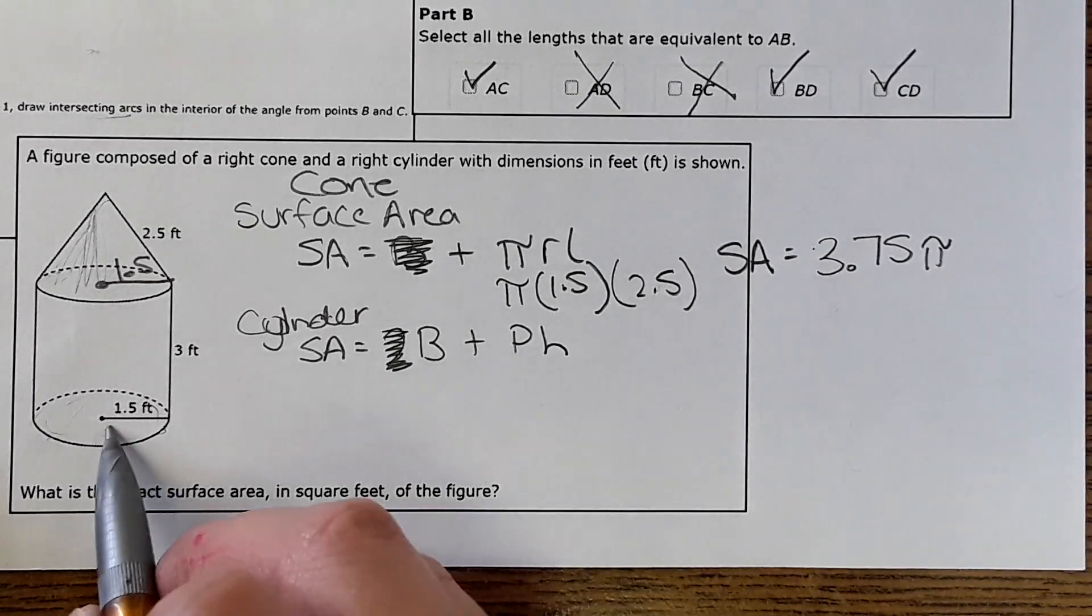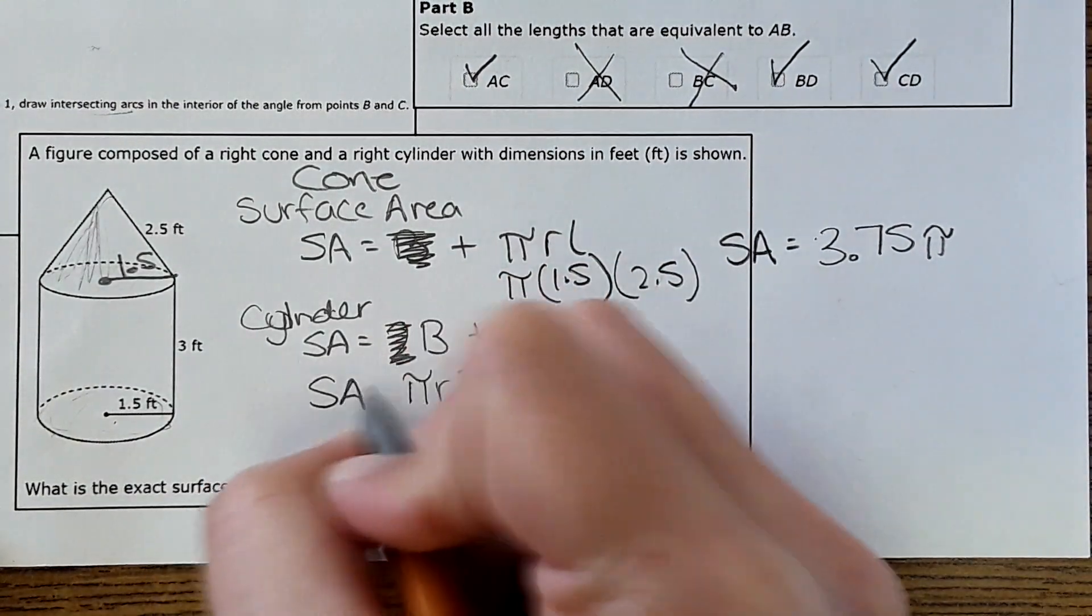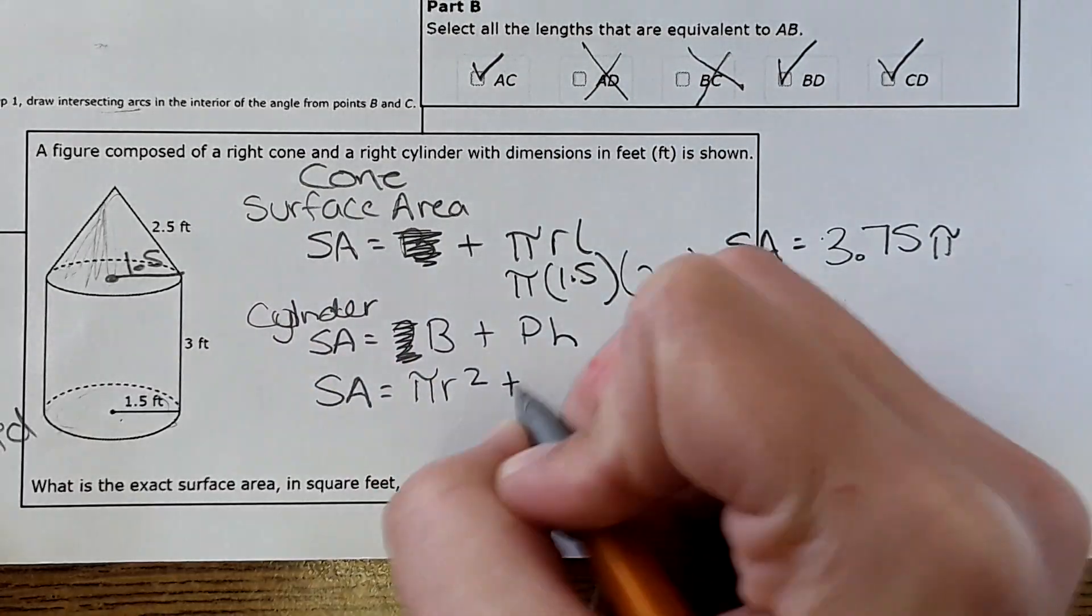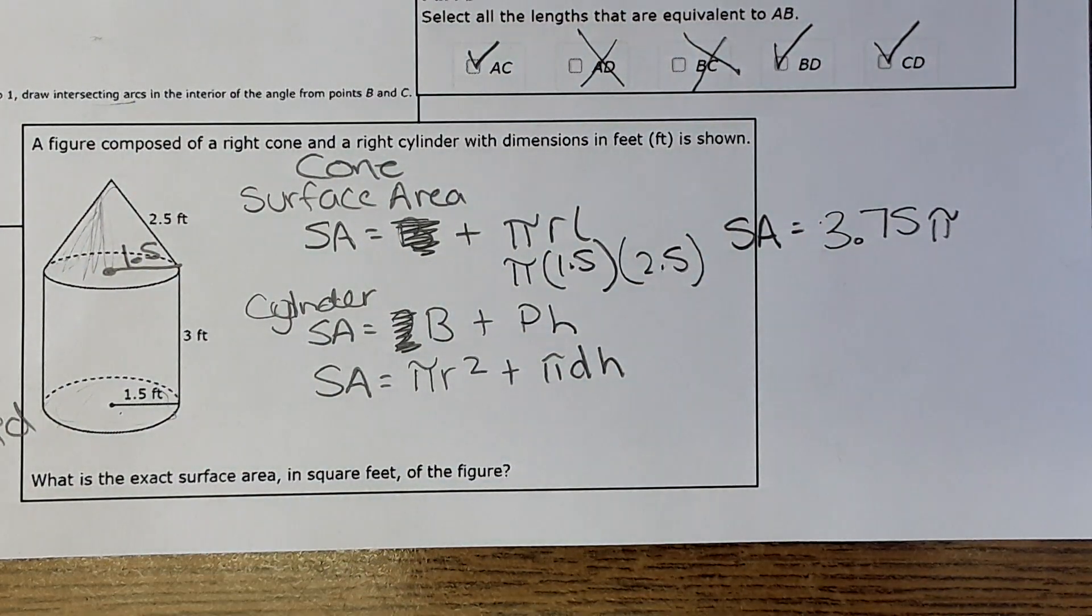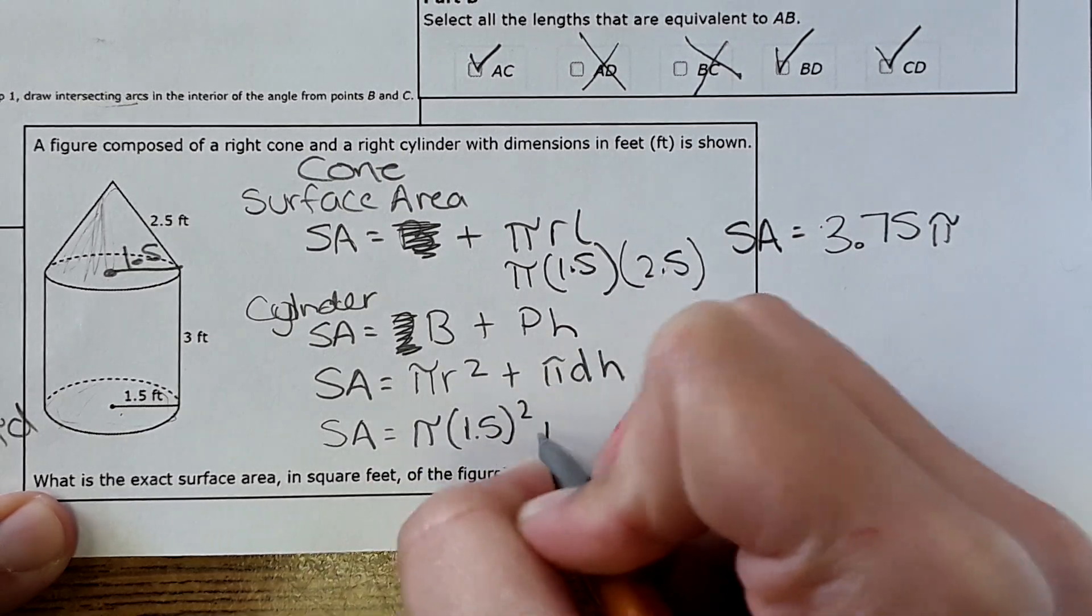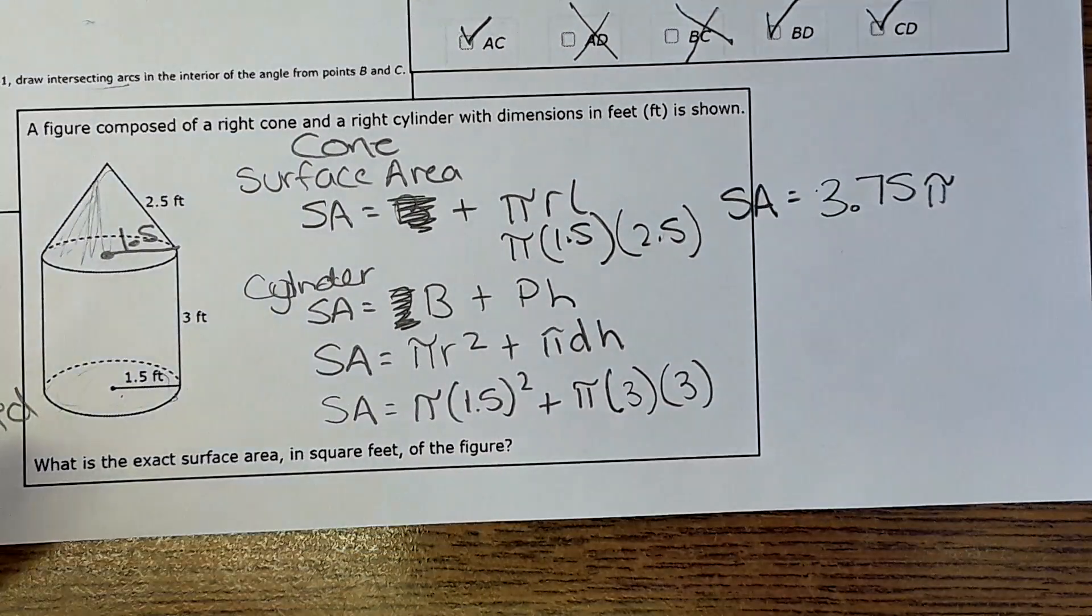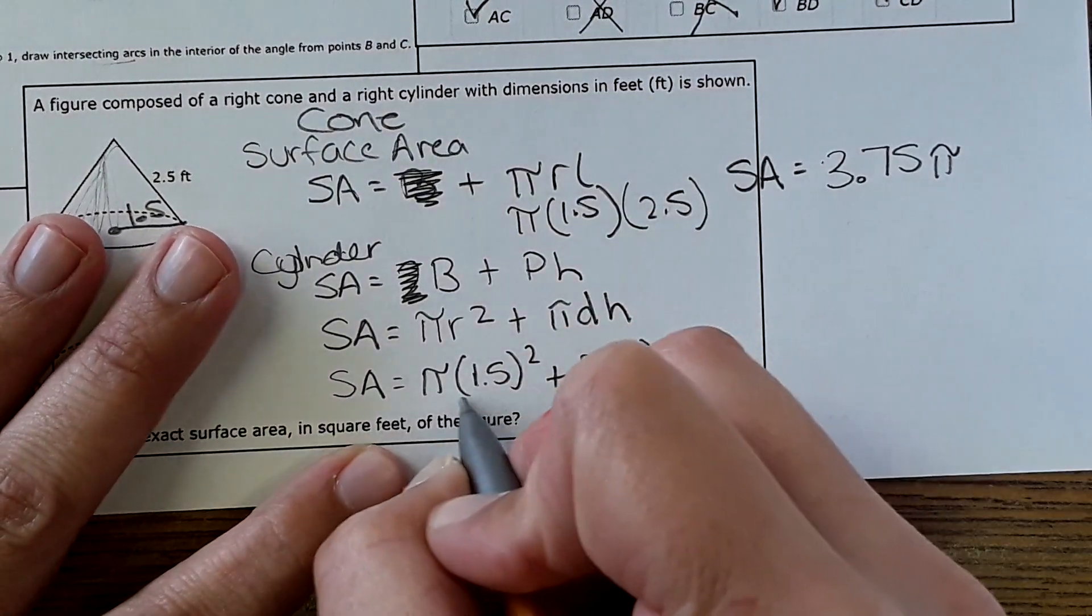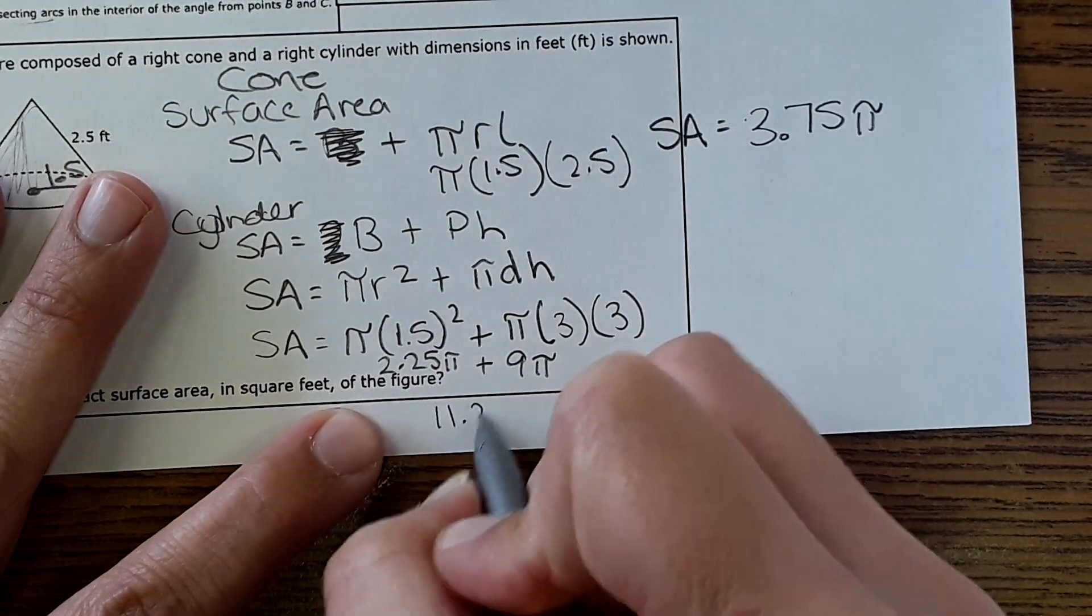Then for this cylinder we need area of the base and then area all the way around. The area of the base is going to be pi r squared for area of a circle. Then perimeter of a cylinder - that would be circumference, which is pi times diameter, and then times height. We get 11.25 pi.